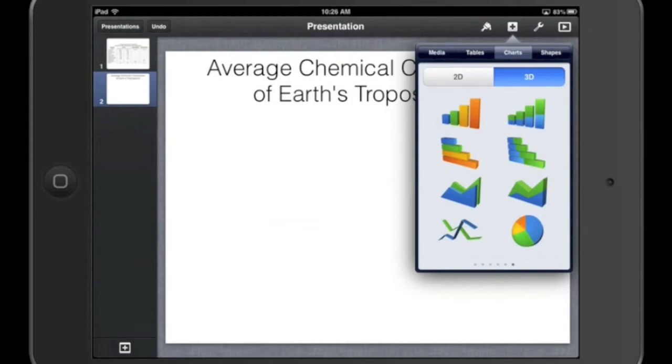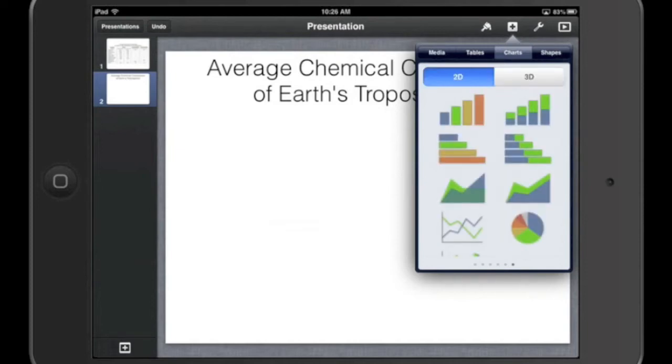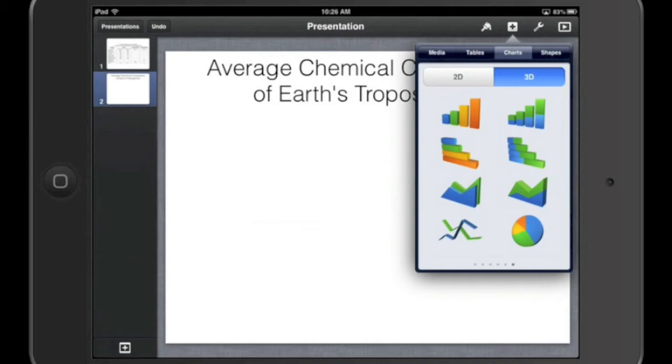Now, Keynote gives you an option to do a two-dimensional chart, and here are your choices, or a three-dimensional chart. I think it goes without saying that students are always going to pick the three-dimensional one because it's much more fun. So here's your choice of charts. We've got bar graphs, horizontal and vertical, line graphs, and then, of course, your pie chart.